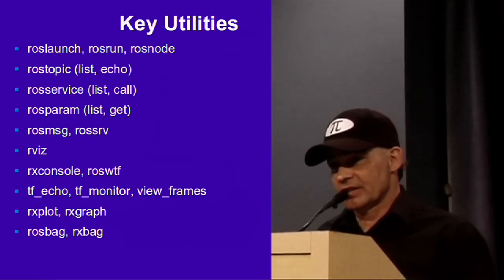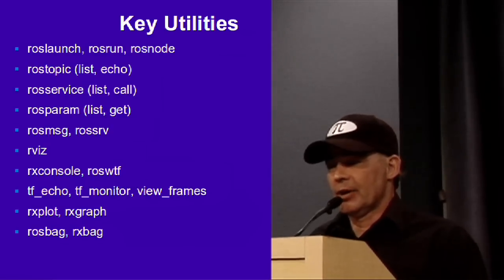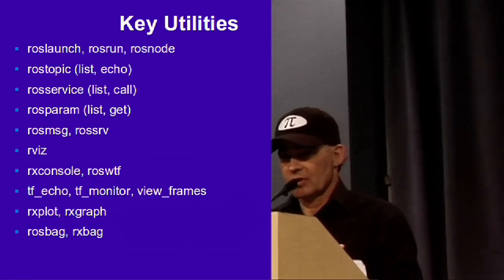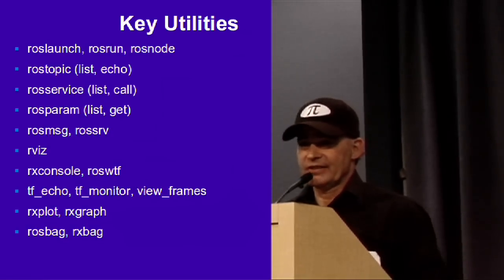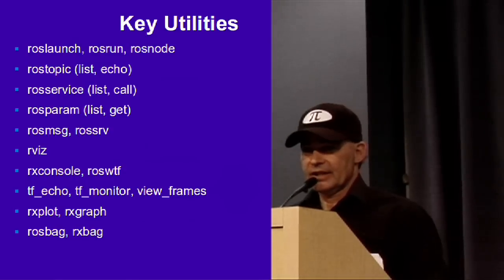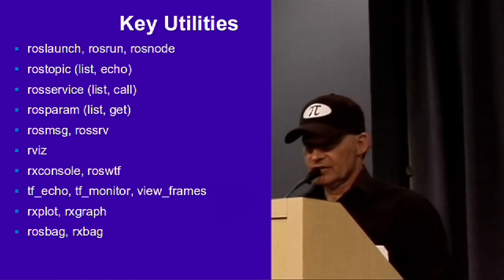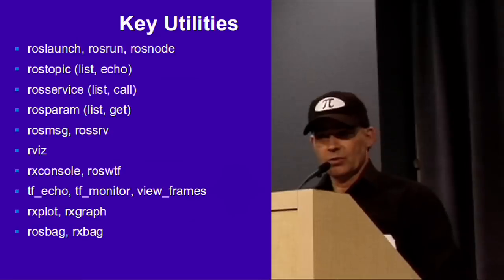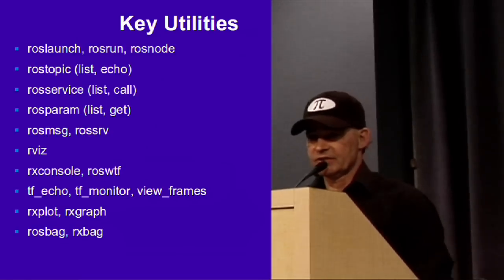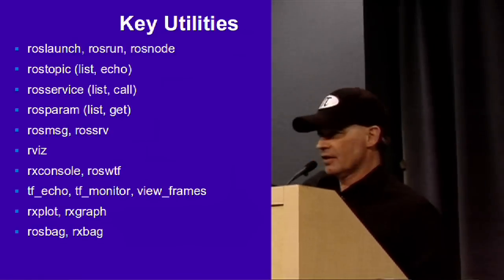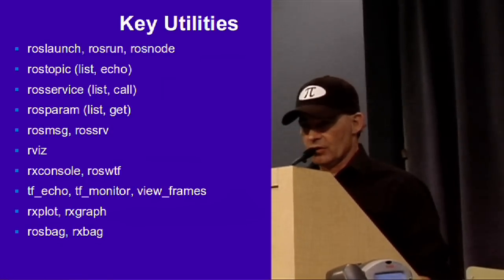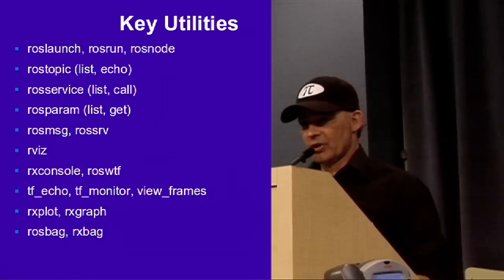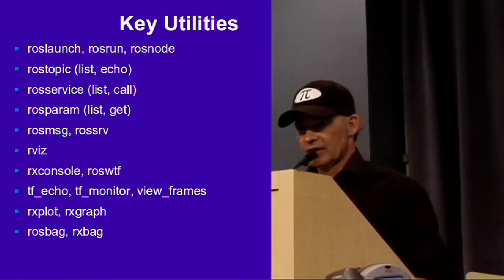When you follow the installation instructions on the ROS.org site for Ubuntu, you have a couple of choices of how much of ROS you want to install all at once. If you've got lots of disk space, just go for the whole shebang. It's basically a bunch of Debian packages that from that point forward are totally managed by the update manager. It's only later when you're looking at third party packages that you tend to need to look outside of that basic distribution.